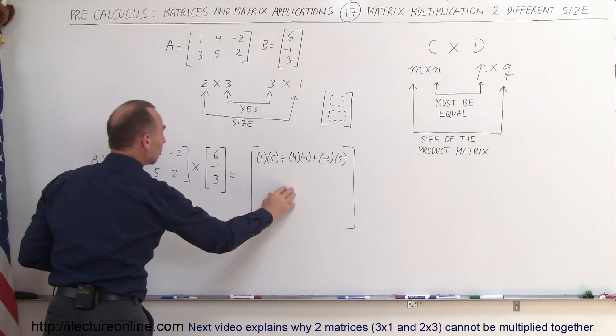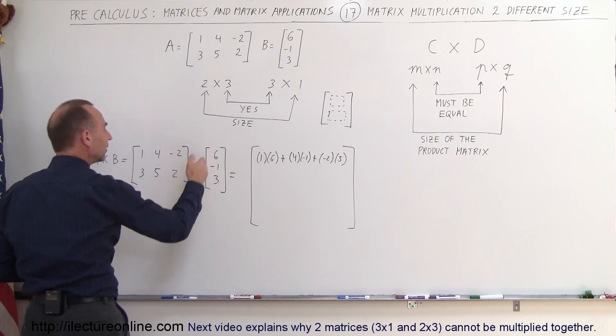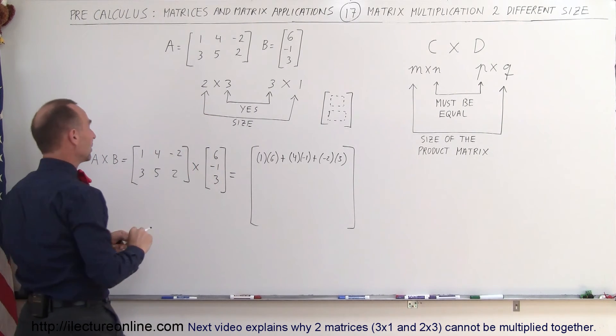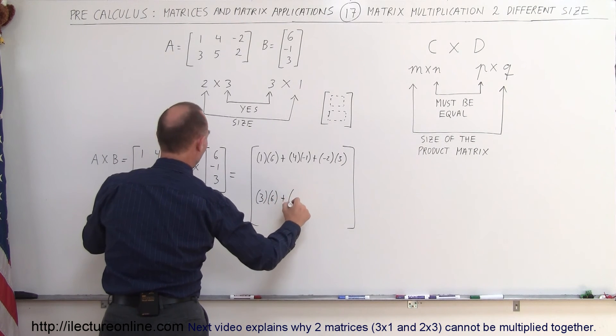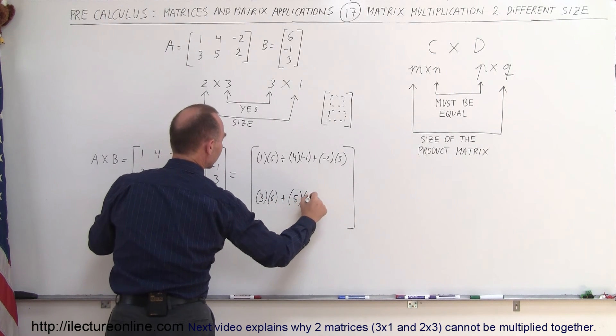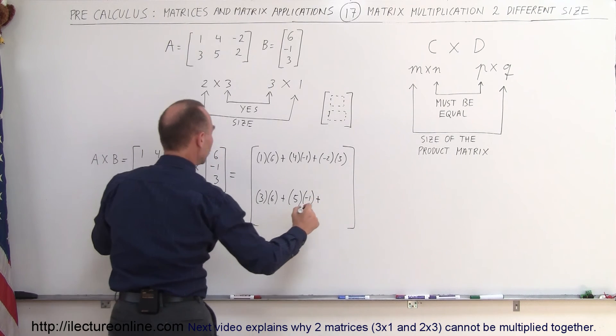And now to get the second element, you will multiply the second row times the column. There's only one column here, so it will be 3 times 6 plus 5 times the negative 1 plus a 2 times 3.